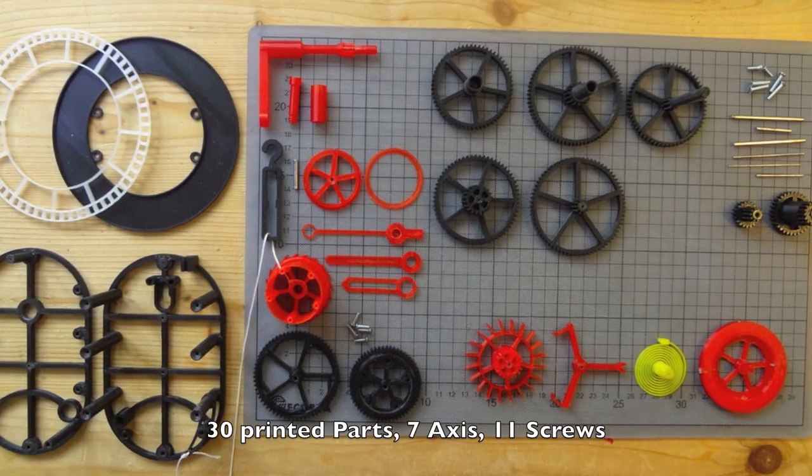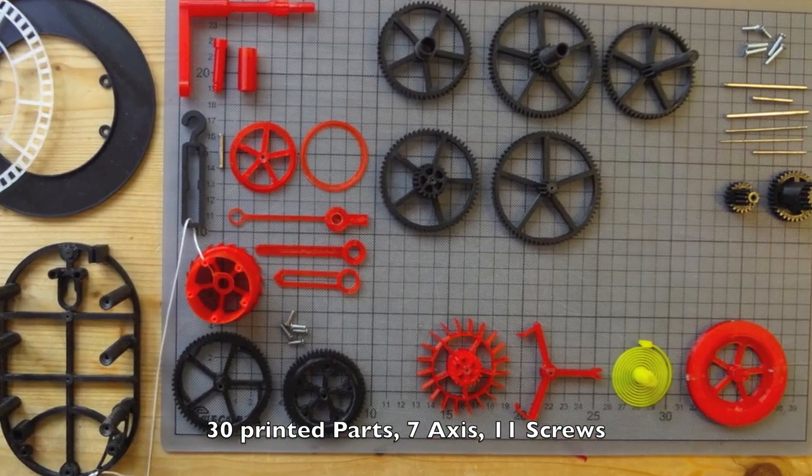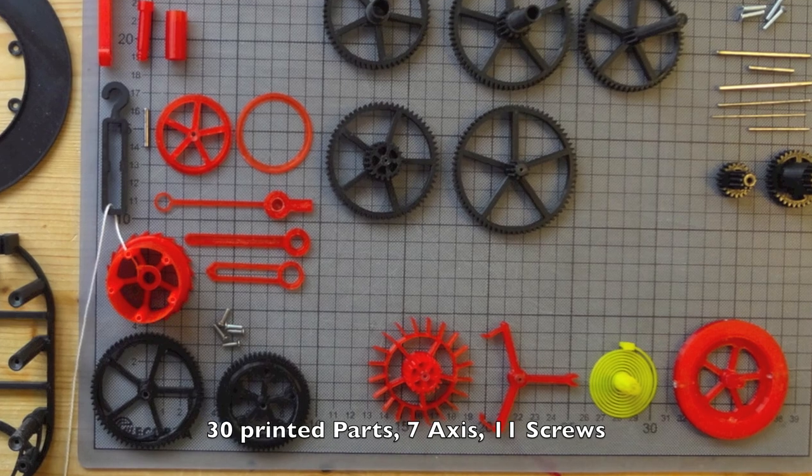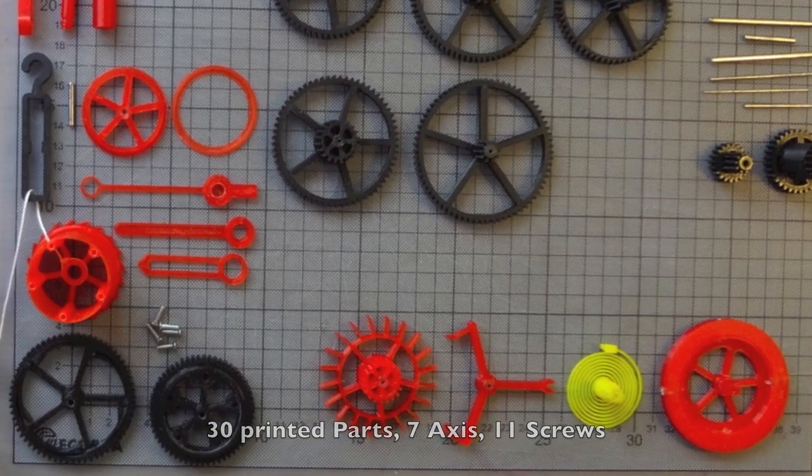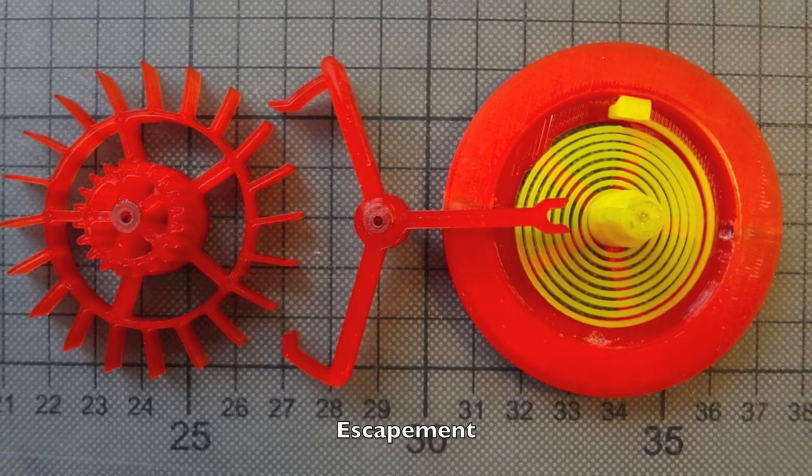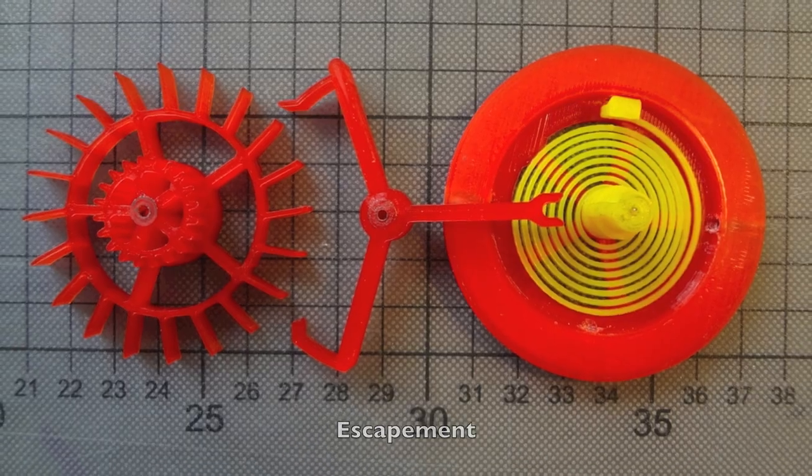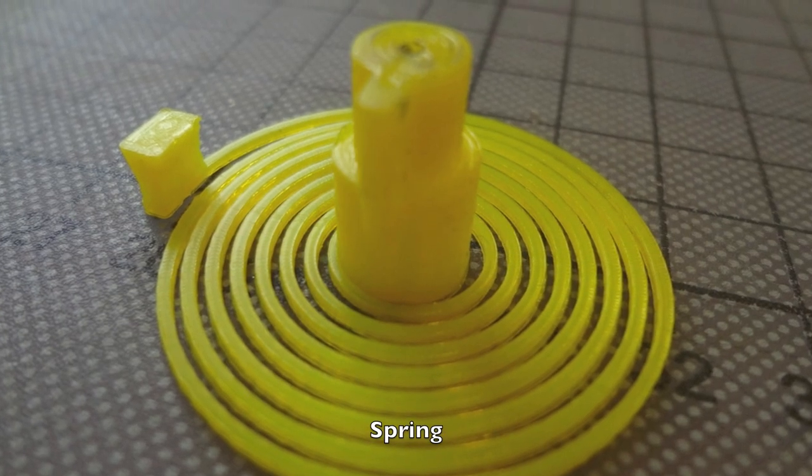The clock consists of 30 printed parts, 7 axes, 11 screws. Also the main escapement parts are printed. Even the spring is a printed part.